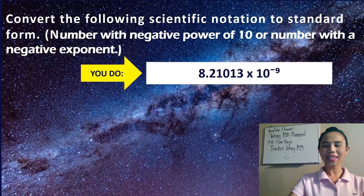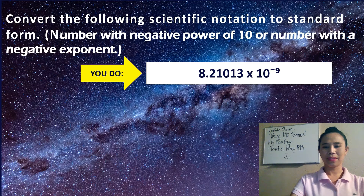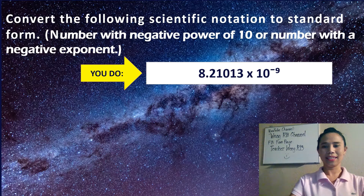Let's have another example for you to try: 8.21013 times 10 to the negative 9. Can you do that? Of course you can. I'm giving you another 30 seconds to try. Remember, if you have a negative exponent, you are moving to the left, and it says negative 9, so you are moving 9 places to the left of the decimal point.